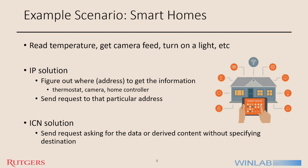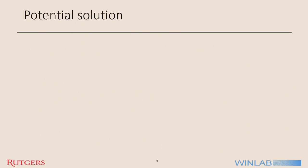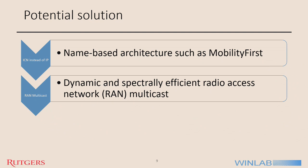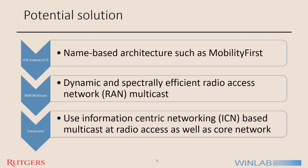Relating to these issues of IP, poor handling of multicast, and traditional unicast delivery, the potential solution is to use ICN instead of IP. We can use name-based architectures such as MobilityFirst. We create a dynamic and spectrally efficient radio access network multicast. Combining ICN and multicast, we can get an information-centric networking-based multicast at both the radio access network and core network.